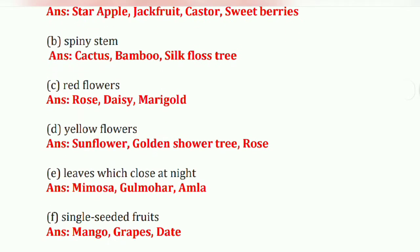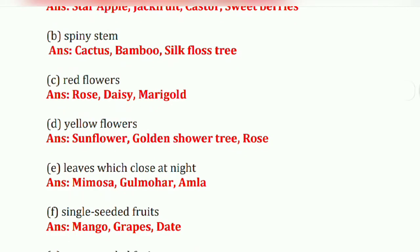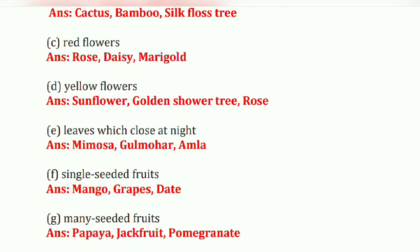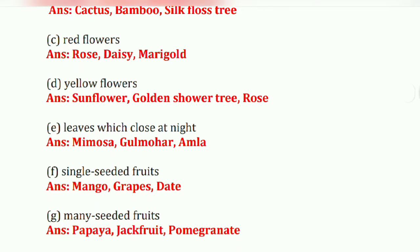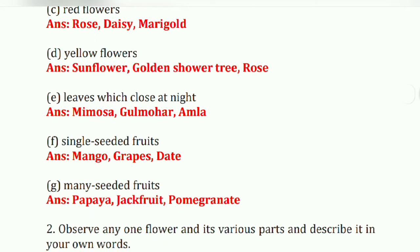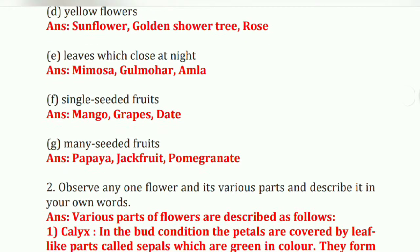Third: red flowers — rose, desi, and marigold. Next, yellow flowers — sunflower, golden shower tree, and yellow rose. Next: leaves which close at night — mimosa, gulmohar, and amla. Next: single-seeded fruits — mango, grapes, and date.